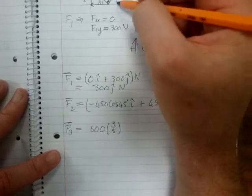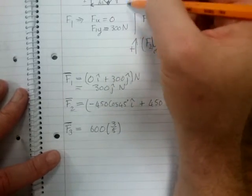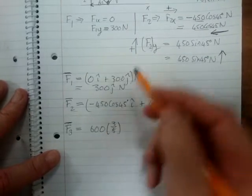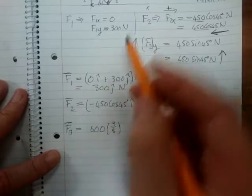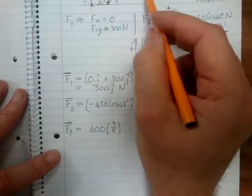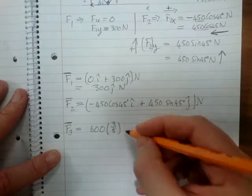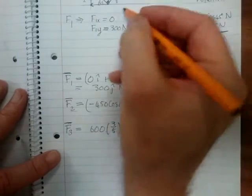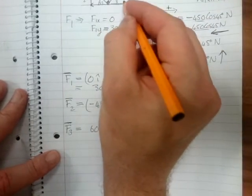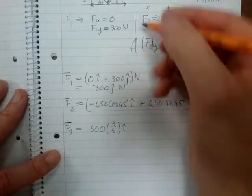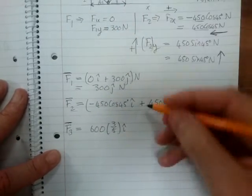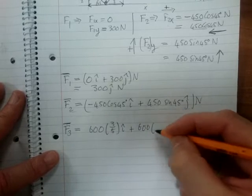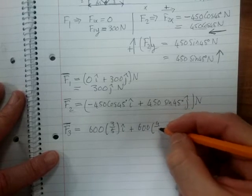So F3, the X component will be 600 times 3 over 5 in the I direction. And we know that it's positive because the component is in that direction. Then we need to look at the Y, which will be 600 and we have 4 over 5 J.